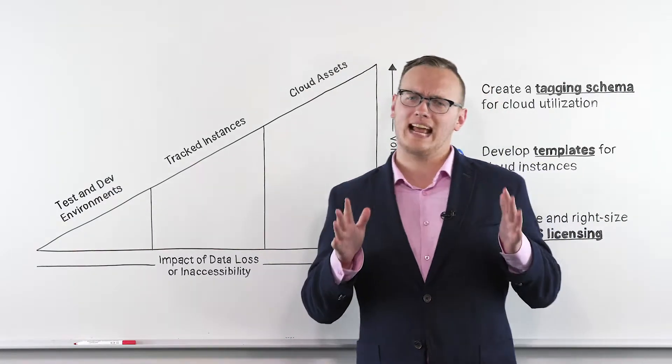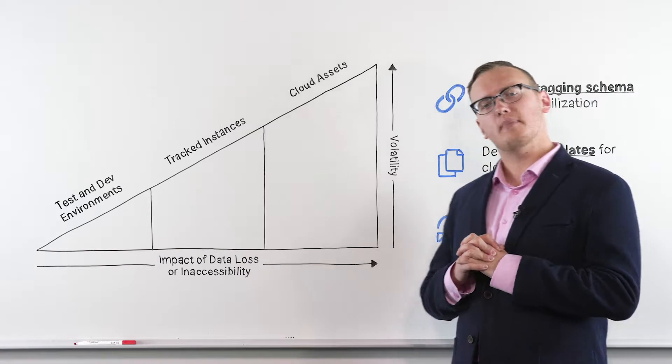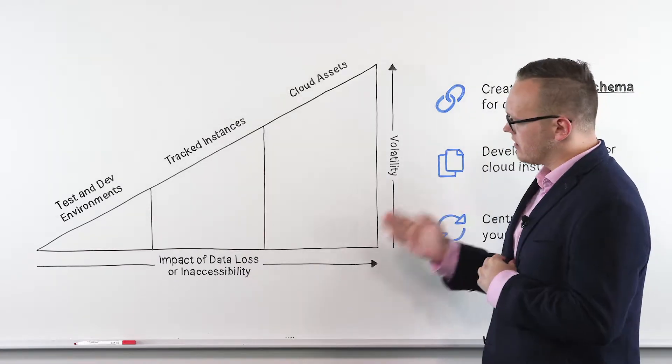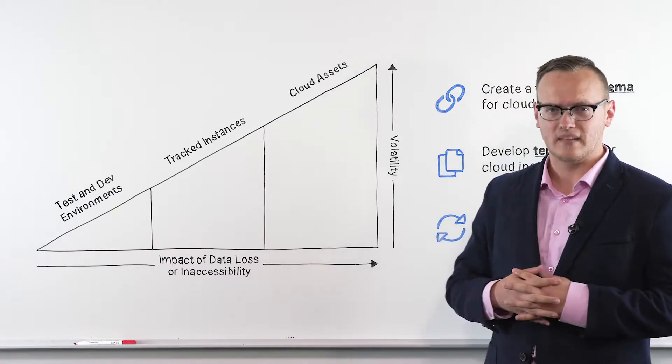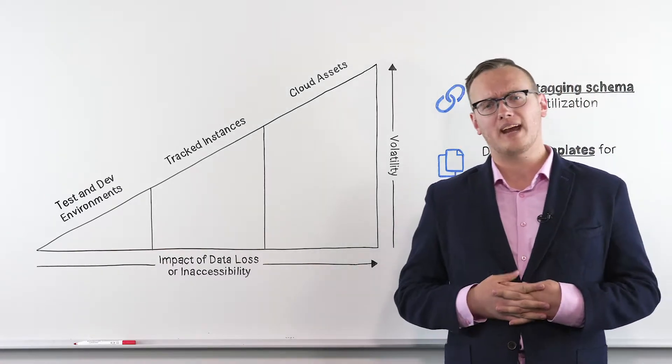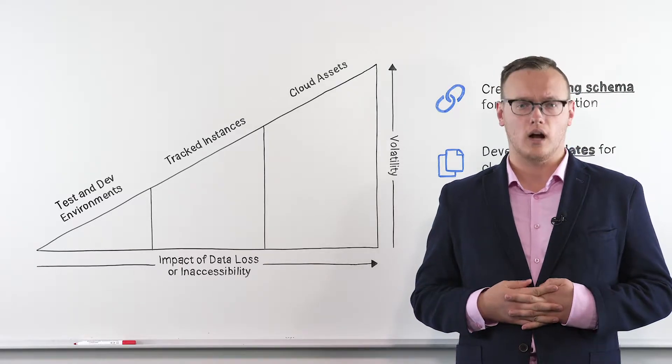Now not every cloud instance will fit the definition of an asset. This model is based on two concepts. The first is the impact of data loss or inaccessibility. How bad will it be if you can't access the data in that cloud instance, or if that data were to be compromised?